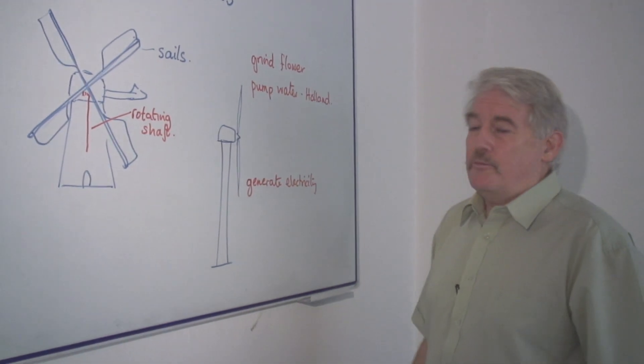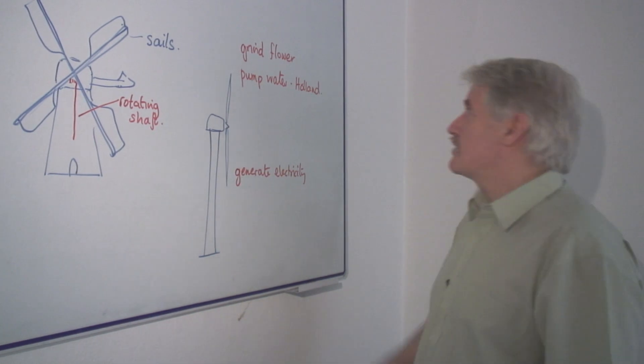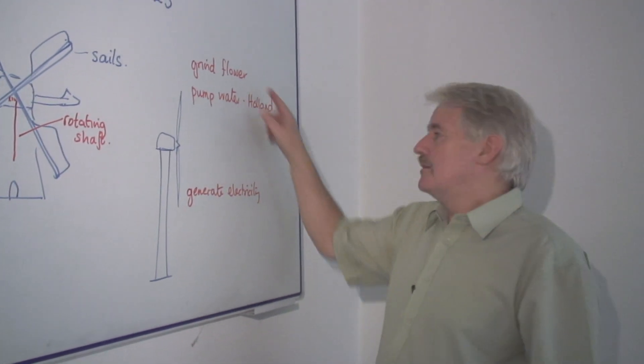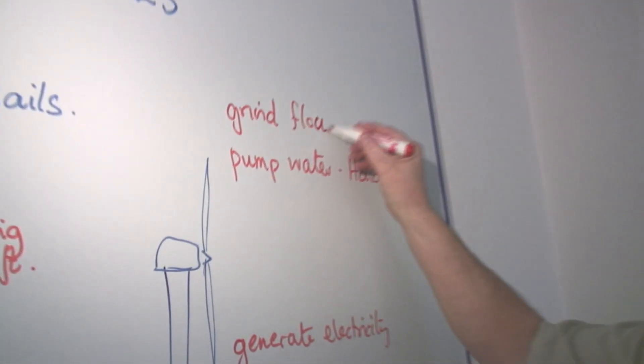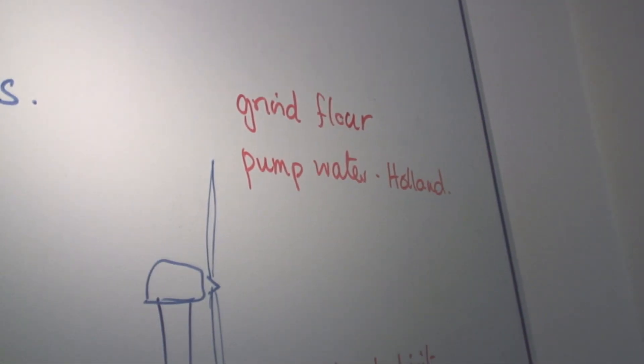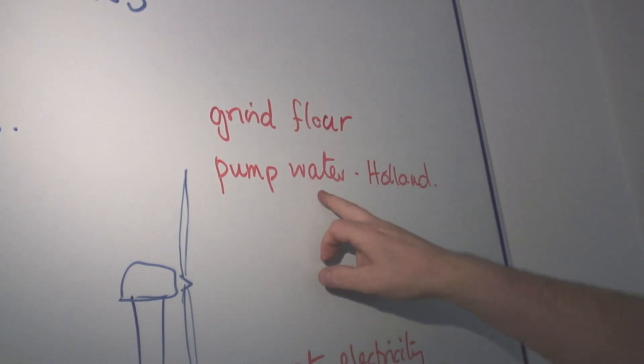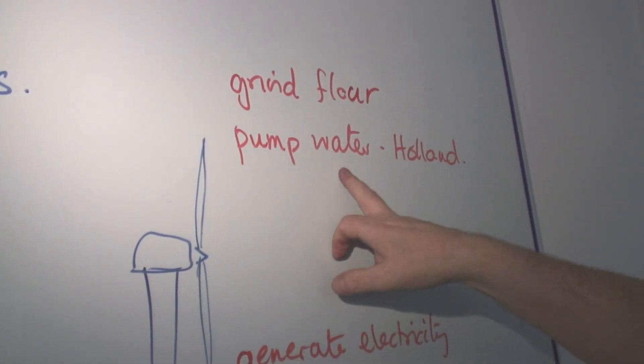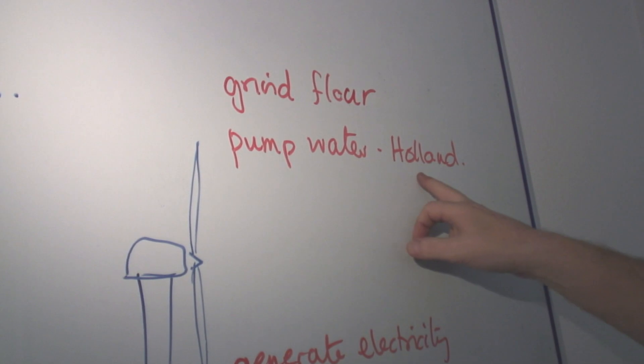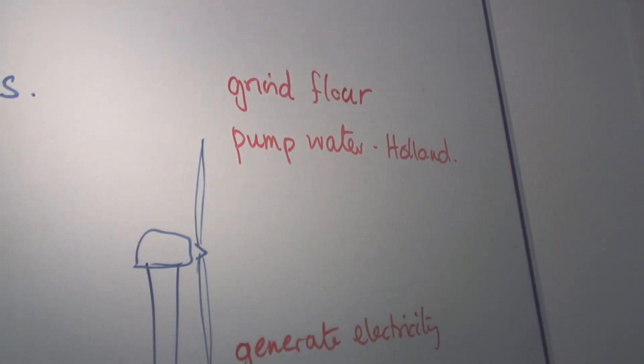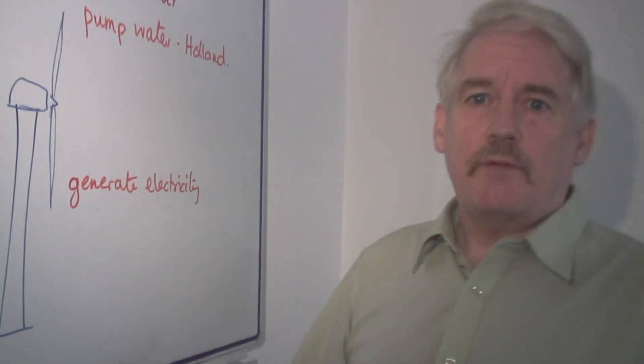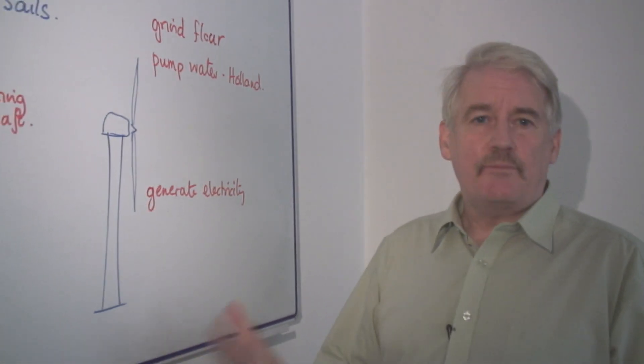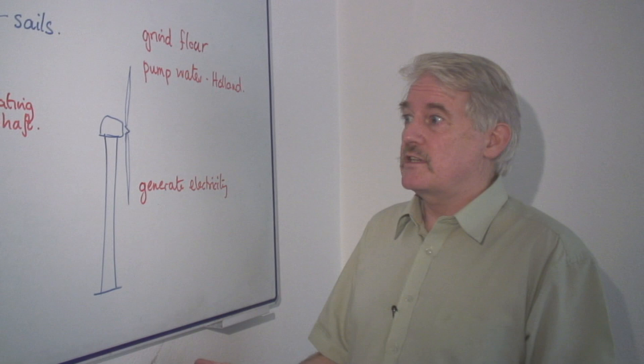Now a lot of people think mills are only designed to grind flour. But in fact the first and the most effective mills were designed to pump water and these were those in Holland particularly where they were draining land and there were large amounts of water there and they had to keep the land dry because it was below sea level.